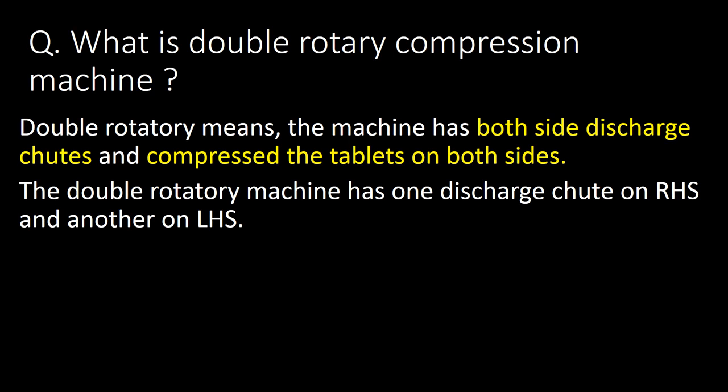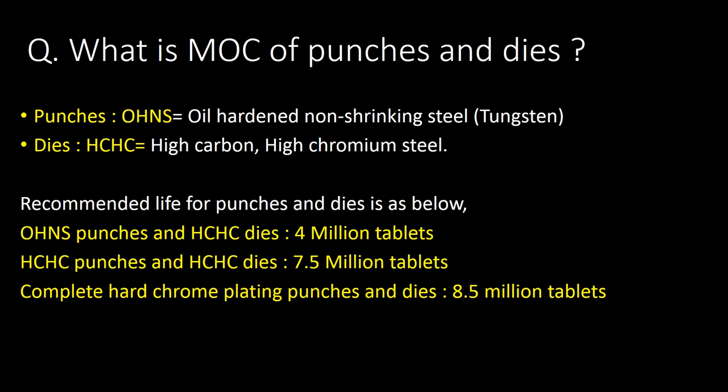What is a double rotary compression machine? Double rotary means the machine has discharge chutes on both sides and compresses tablets on both sides. The double rotary machine has one discharge chute on the RHS (right-hand side) and another on the LHS (left-hand side).